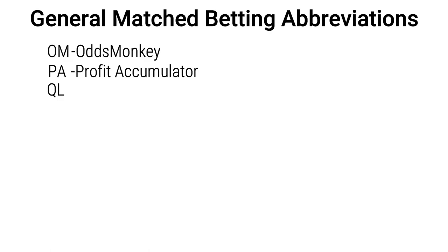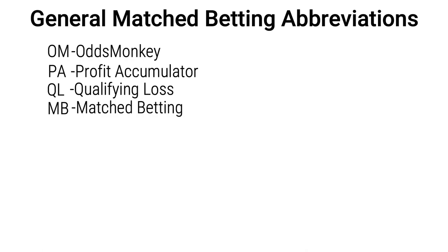You then have QL which stands for qualifying loss. A qualifying loss is the amount of money you're going to lose when you place a qualifying bet with an offer to do with unlocking a free bet. MB is simply match betting. QP is for qualifying profit — this is when you take a slight arb on a qualifying bet so instead of it being a qualifying loss, it's a slight profit, hence QP.